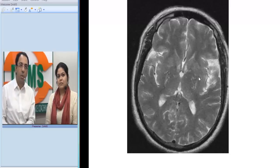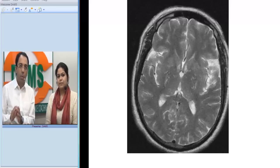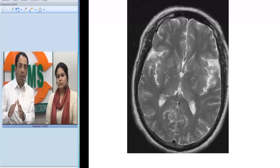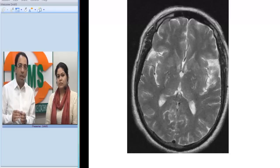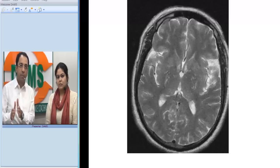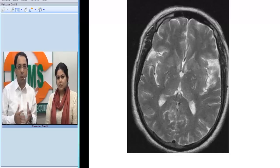Clinically suspected meningitis in an immunocompromised patient, with basal exudates. On a contrast-enhanced image we could see meningeal enhancement or meningeal thickening. The MRI shows tiny cystic changes which represent widening of the perivascular spaces, also called Virchow-Robin spaces. Microcystic changes, basal exudates, and meningeal thickening are typical of cryptococcal meningitis.